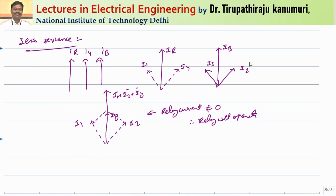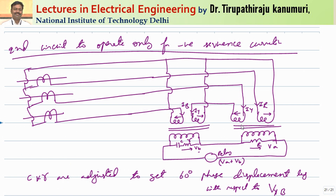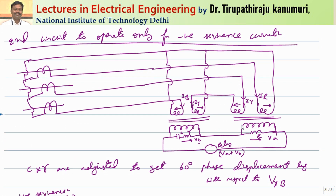However, there is a disadvantage: this relay also senses zero sequence components — i.e., components associated with ground. For zero sequence components, I1 + I2 + Iy results in a very large magnitude, so the relay also operates for zero sequence currents. If you want the relay to operate only for negative sequence and not for zero sequence, a different circuit is required.